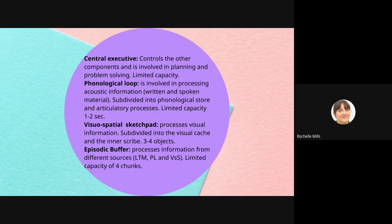The phonological loop is involved in processing acoustic information — so this is written and spoken material. It's subdivided into the phonological store and articulatory processes. The phonological store stores the words that you hear, and articulatory processes allows maintenance rehearsal — repeating words in a loop to keep them in your working memory while they're needed. The capacity of this loop is thought to be two seconds worth of what you can say.